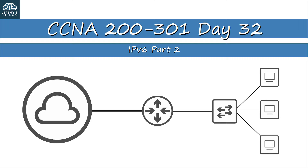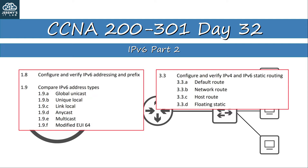In this video we will continue our studies of IPv6. As a reminder, these are the specific exam topics relevant to IPv6. In today's video we will focus on 1.9, learning about various IPv6 address types. In Day 31 I briefly introduced global unicast and link-local IPv6 addresses, but this time let's go more in-depth and also learn about the other types.